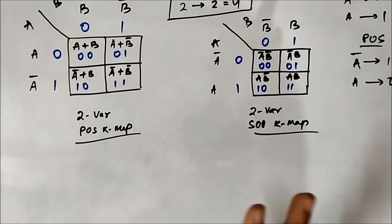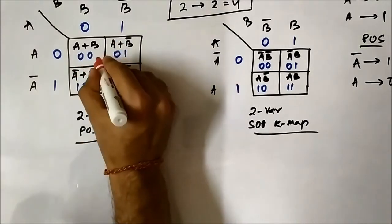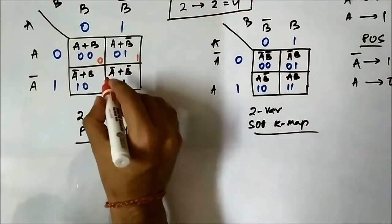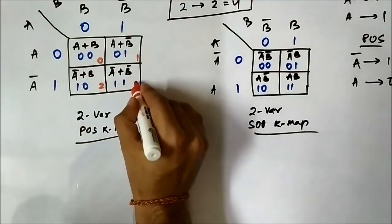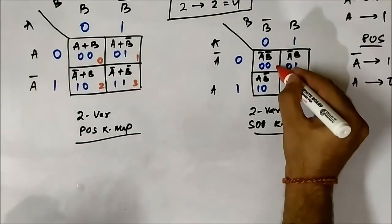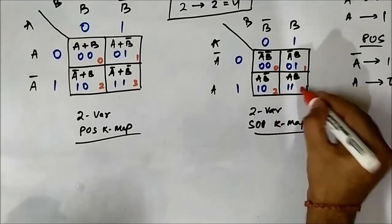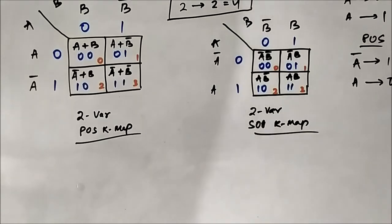This is the general representation of a two variable KMAP. Each cell here stands for a particular value — 0, 1, 2, and 3 — and both the SOP and POS KMAPs use the same numbering. This is all about the two variable SOP and POS KMAP.